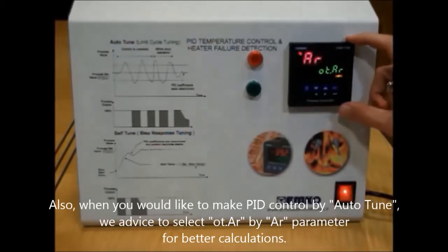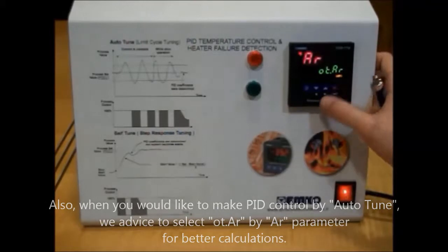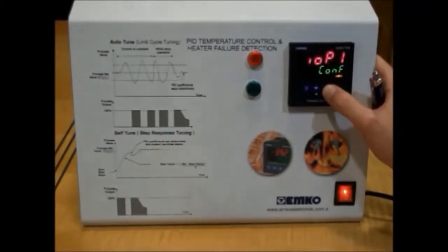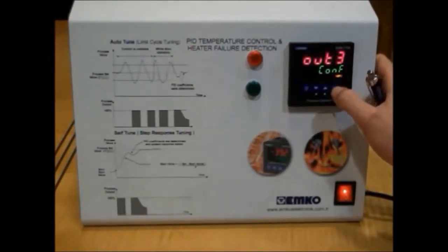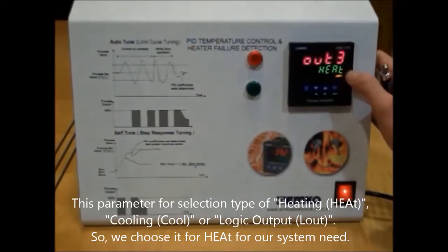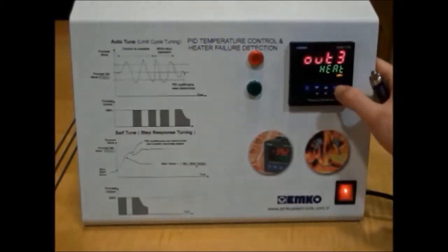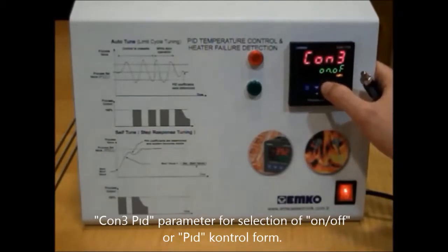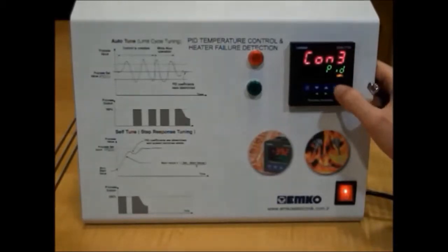Also, when we are doing autotune, we have to choose for our parameters OTAR. Here, this is more useful and more sensitive. Then, this is output three parameter. We entered here and we can select here for heating or cooling or logic output. We are using heating now. And also, we can choose on-off control or PID control. We want to PID control now. So, we selected PID.